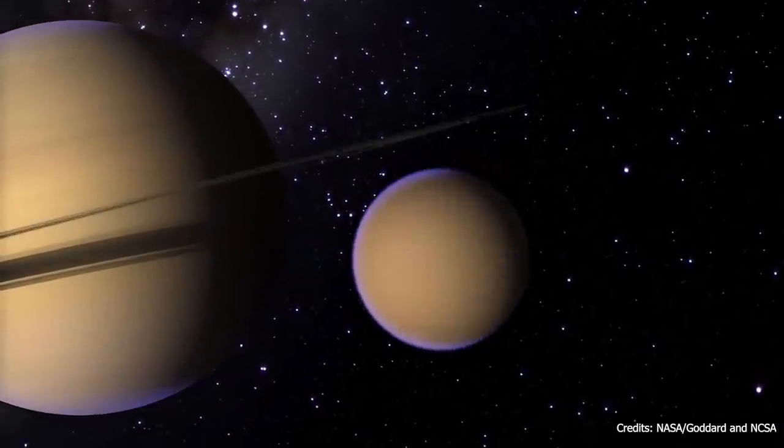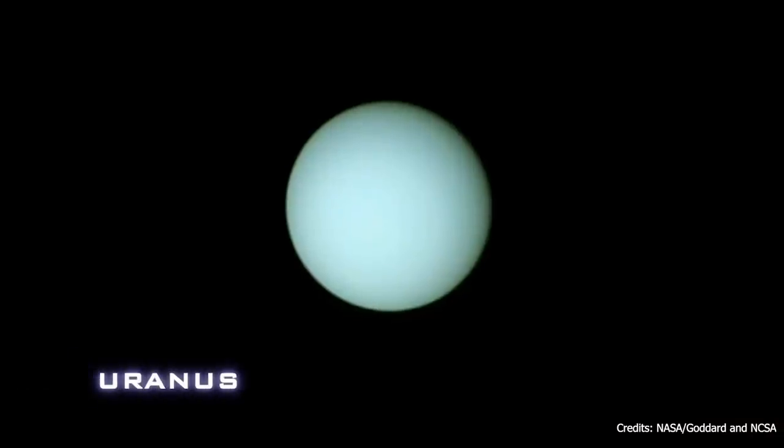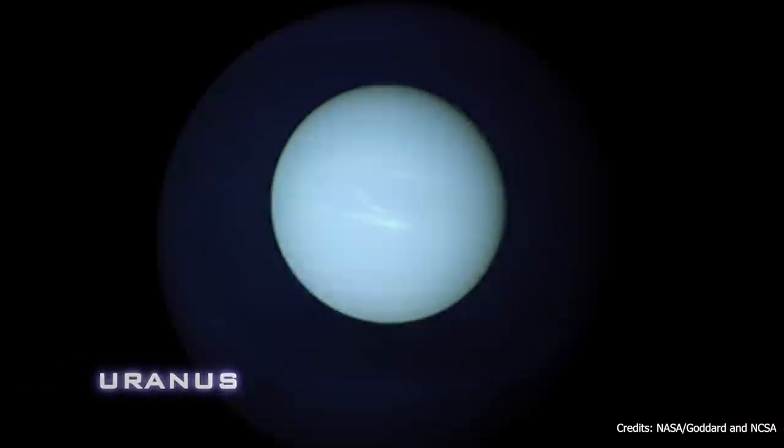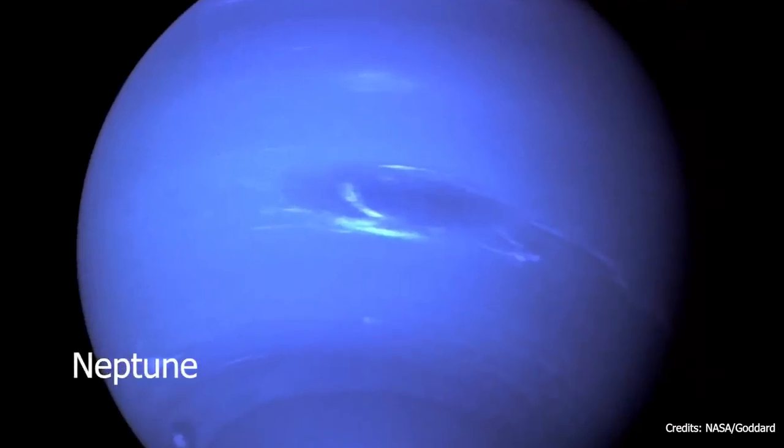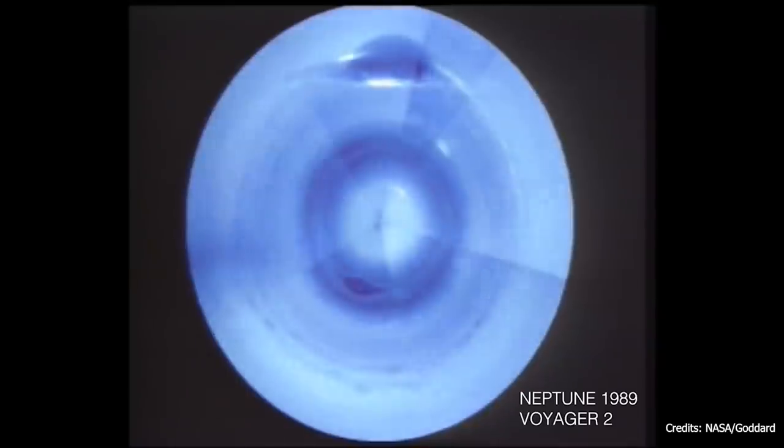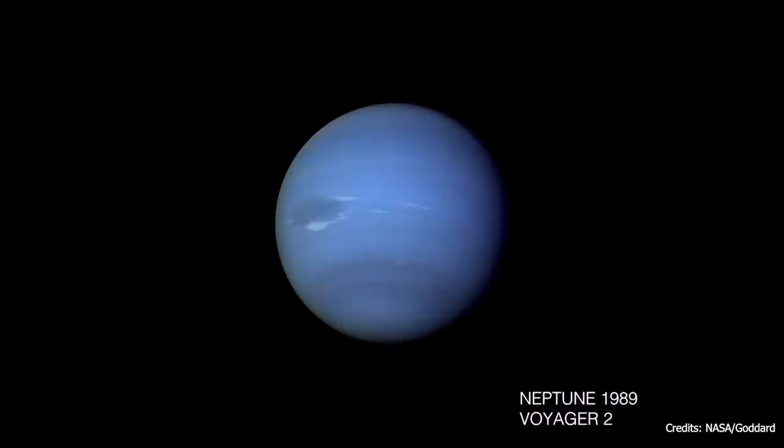It will also study the weather and climate of the mysterious ice giants Uranus and Neptune, which have only been observed by Voyager 2 more than 30 years ago.